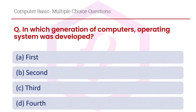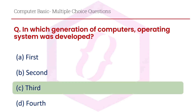In which generation of computers was the operating system developed? Option A first, option B second, option C third, option D fourth. The right answer is option C, third.